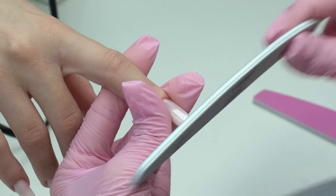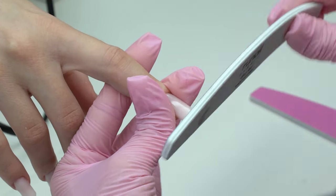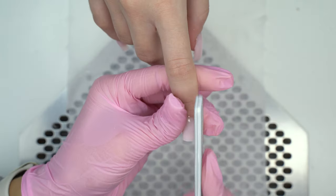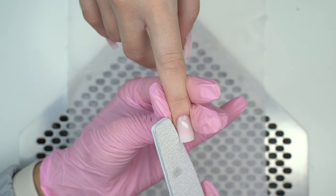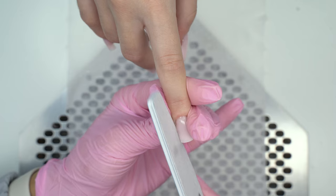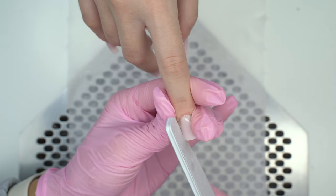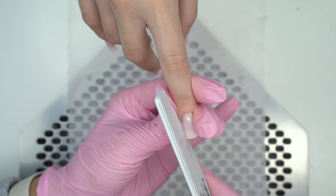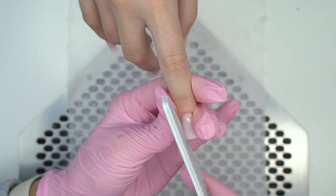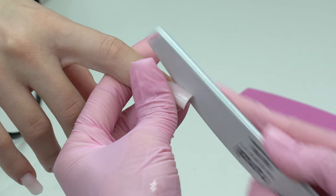Now we can file the nails. I'm filing a sharp square shape. The free edge is perpendicular to the central axis when viewed from the top. What do you think is the best nail shape for this model? We've chosen a square one. Should it have been an almond shape? Let me know what you think.